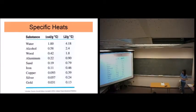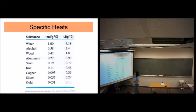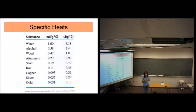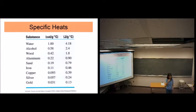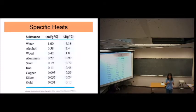Here are some different substances with their specific heats in joules per gram. Look at what has a really, really high specific heat — water. Water can take in a lot of heat before it changes one degree. That's a really good thing for your body, because we have a lot of water in our system. That means we can absorb a lot of heat in and out and still help maintain body temperature.